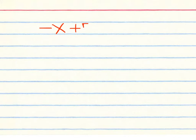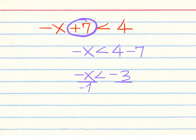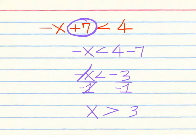Next: negative x plus 7 less than 4. Leave the negative x on the left-hand side and move the plus 7 to the right, making it minus 7 — that gives negative 1x less than negative 3. Divide both sides by negative 1, and you're left with x and 3, but you need to flip the inequality sign. It should be pointing towards the 3, so x greater than 3.